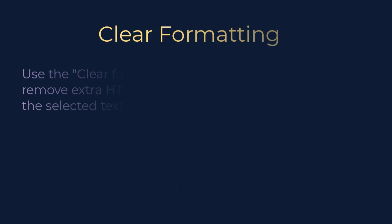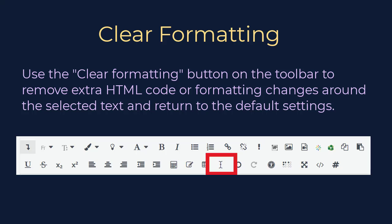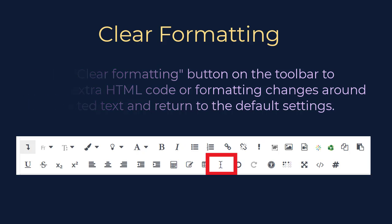If you would like to return any part of your text to the default Moodle settings, you can do so with the Clear Formatting button. This button will remove all extra HTML code or formatting changes around the selected text.